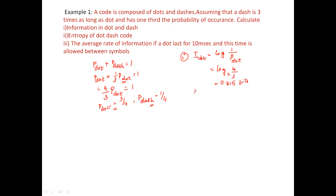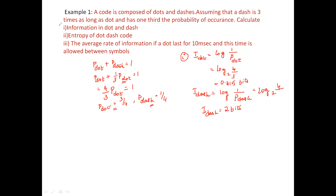Similarly, the information present in dash equals log(1/P(dash)). P(dash) is 1/4, so we get log(4) to base 2. When you simplify, I(dash) is equal to 2 bits. The first part of the problem is completed — we have found the information content of dot and dash.